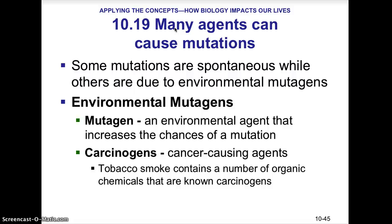Many agents can cause DNA mutations. Some mutations are spontaneous, while others are due to environmental mutagens. An environmental mutagen is an environmental agent that increases the chances of mutations. Such are carcinogens, which can lead to cancer. Carcinogens are cancer-causing agents. Tobacco smoke contains a number of organic chemicals that are known carcinogens. Some chemicals can be carcinogenic. UV radiation — radiation exposure from sunlight, tanning beds, and so forth — are also known environmental mutagens that can lead to cancer.